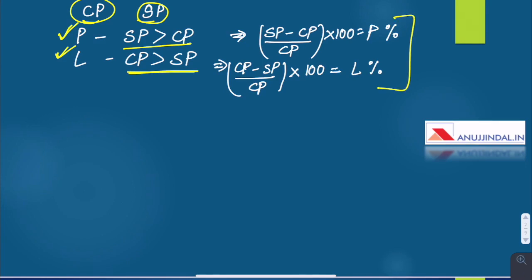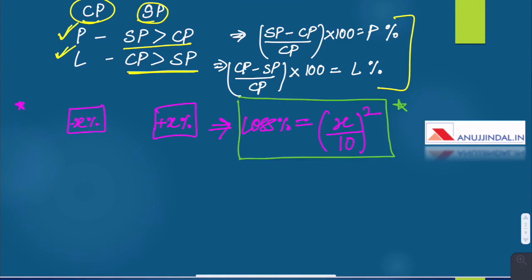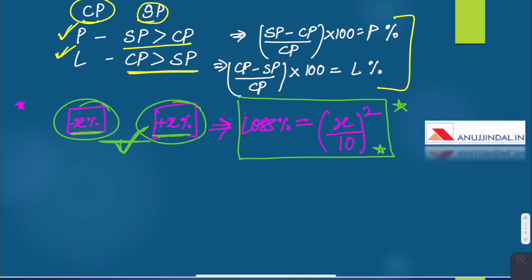Now let us discuss some more important facts related to profit and loss. When a person sells two items at the same price, but one incurs a loss of x percent and the other incurs a profit of x percent, then overall there is a loss. The loss percentage is given by the formula: (common percent)² ÷ 100. The condition is that two quantities are sold at the same price, one incurring a loss and the other a profit by a common percentage.